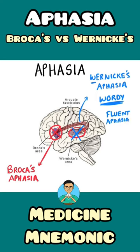In the case of Broca's aphasia, the BR in Broca represents 'broken.' That means the aphasia in Broca's aphasia is broken — there is a loss of words, or there are very few words. So it is a non-fluent aphasia.